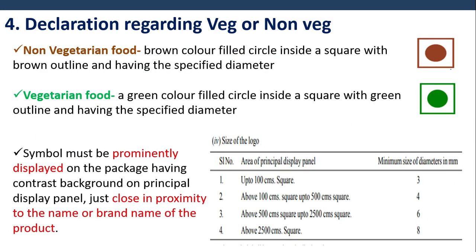Declaration regarding veg or non-veg: Non-vegetarian food is indicated by a brown-colored filled circle inside a square with a brown outline of specified diameter. Vegetarian food is indicated by a green-colored filled circle inside a square with a green outline of specified diameter. The symbol must be prominently displayed on the package with a contrasting background on the principal display panel, in close proximity to the name or brand name of the product.